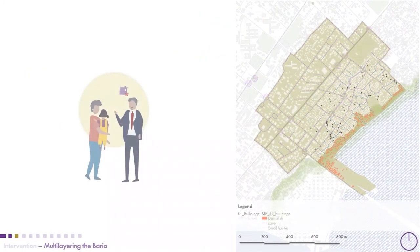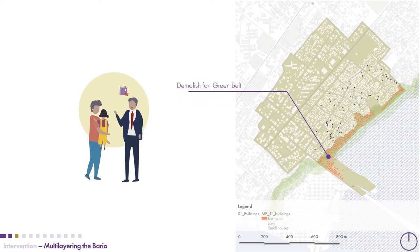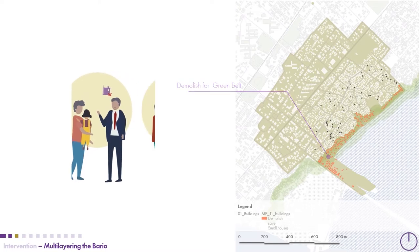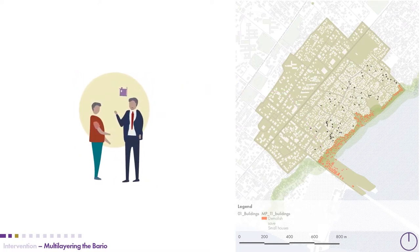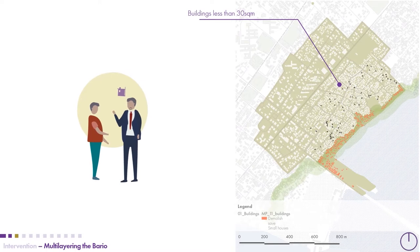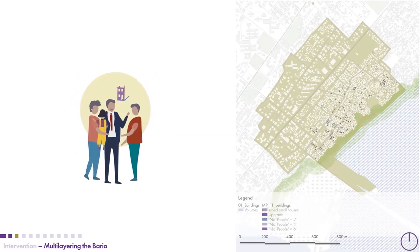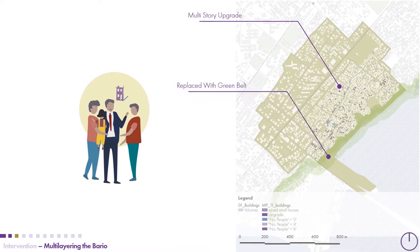The next step was to multi-layer the place. Since we had already introduced the green belt at the city scale, this was going to affect the locations of houses in vulnerable areas. The team proposed negotiations with the mayor, where houses needing upgrading would accept people displaced by demolition activities. This would allow us to improve existing houses while finding new accommodation for displaced residents.